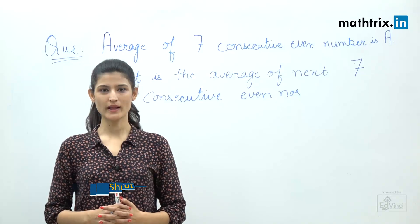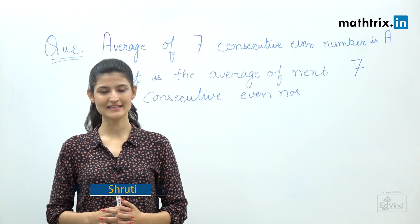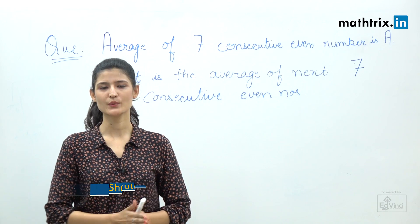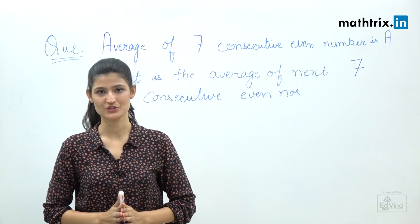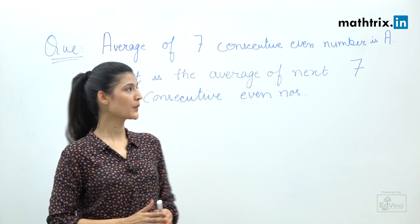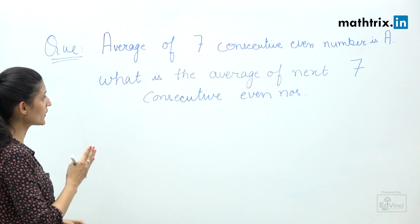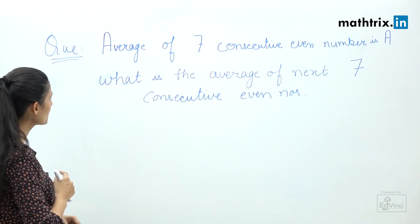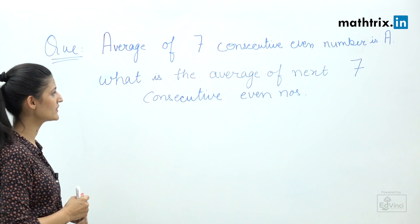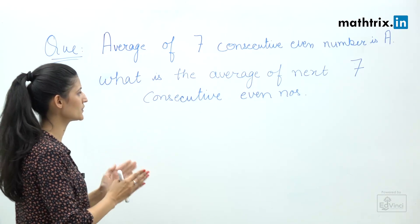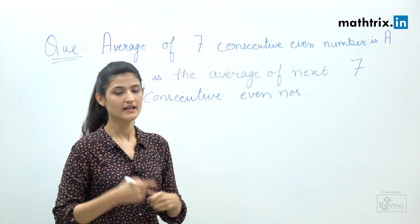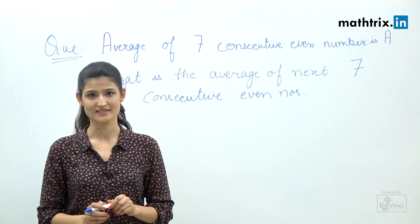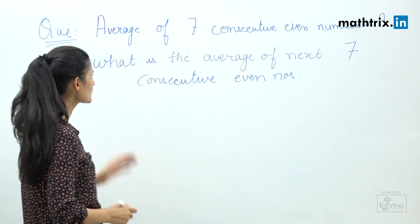Hello everyone, welcome to the series on aptitude tips and tricks. Today I have another question for you from averages. The question is: the average of seven consecutive even numbers is a. What is the average of the next seven consecutive even numbers? This question can be solved in seconds.